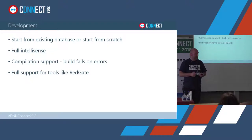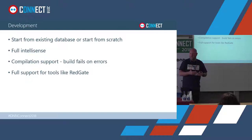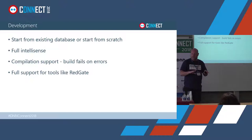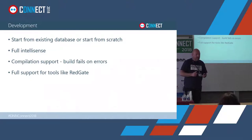You also get full IntelliSense — just as if you're writing SQL code in SSMS, you get full IntelliSense in Visual Studio, but it's even better: syntax checking plus reference checking. So once you start referencing a database object that doesn't exist, it already puts a squiggly line under that. You can immediately see you're doing something wrong.